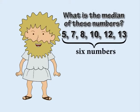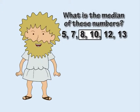There are six numbers in total. So to get to the middle, you count three places along from each end of the sorted list. This gives the pair of numbers eight and ten.